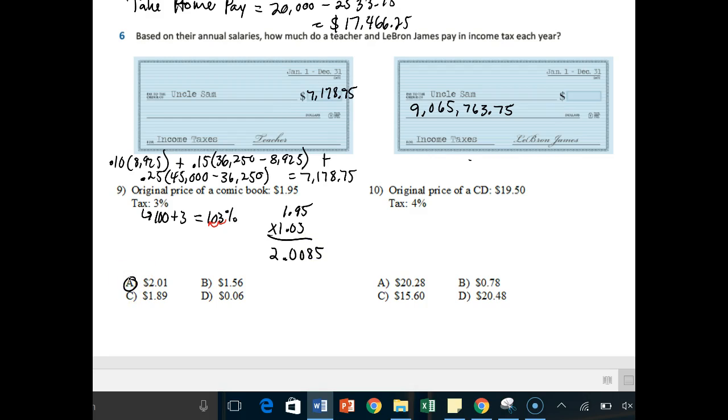If I've done it correctly, 195 times 1.03, yeah. So it goes from $1.95 to $2.01, about $0.06 in tax. Number 10, you'll be doing on your own. That's the end of part two.